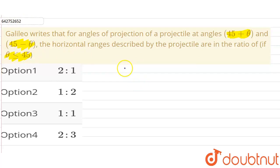Now, Galileo writes the angles as: let us suppose θ₁ as 45° + θ and the second angle is 45° - θ. Now we have to tell what will be the ratio of horizontal ranges of the described projectile.